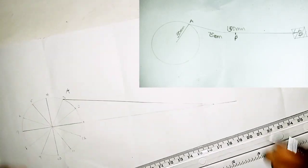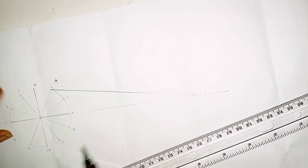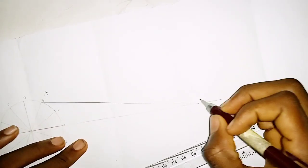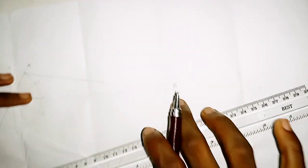Now what we're doing next is projecting all our points, all the divisions, to this point we can call point B. So I'm projecting everything to this point.